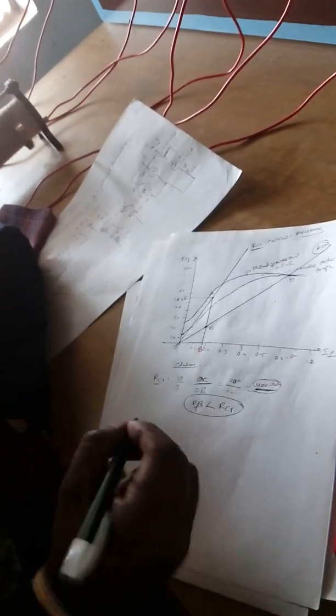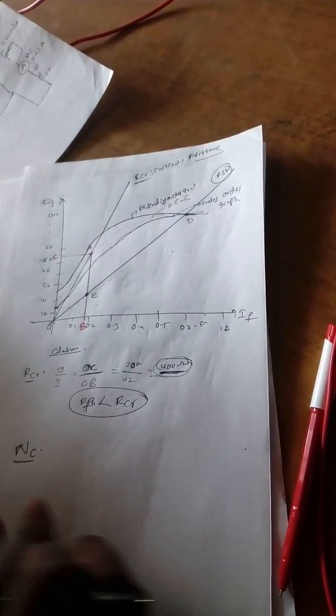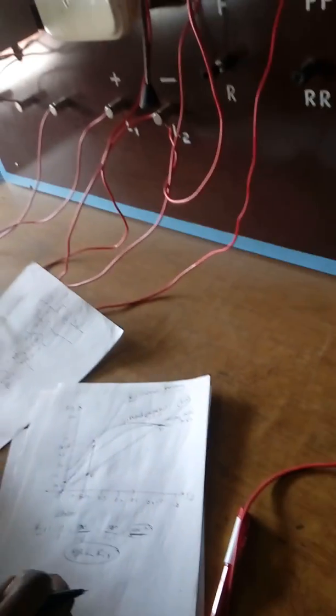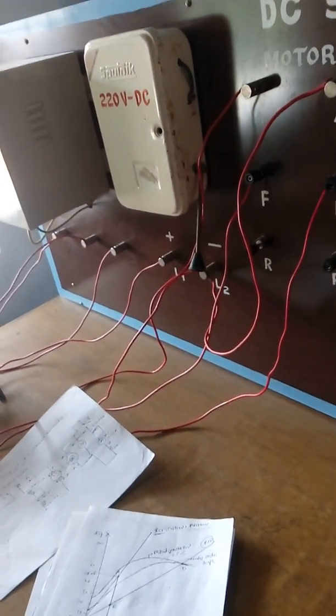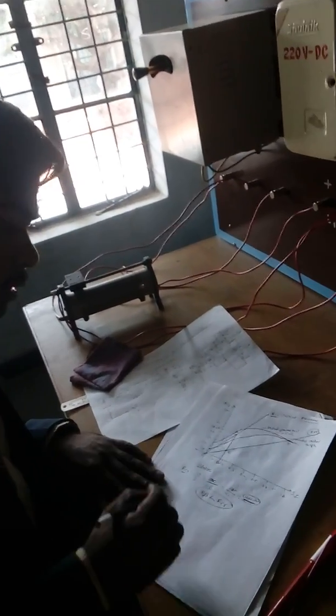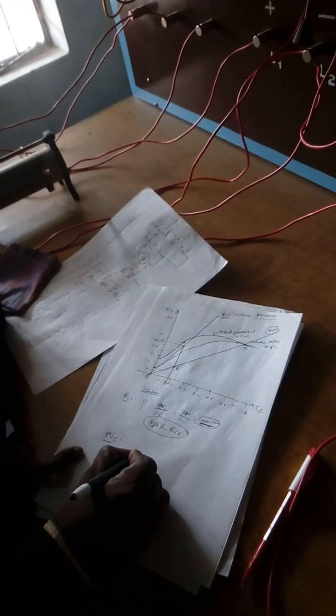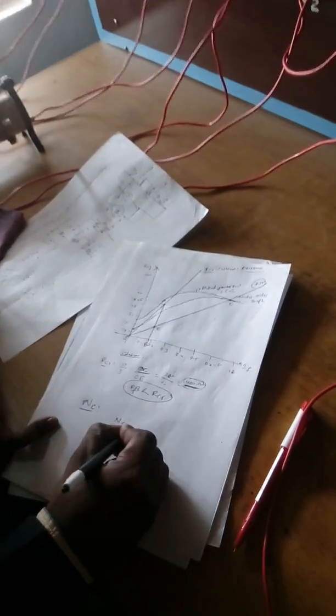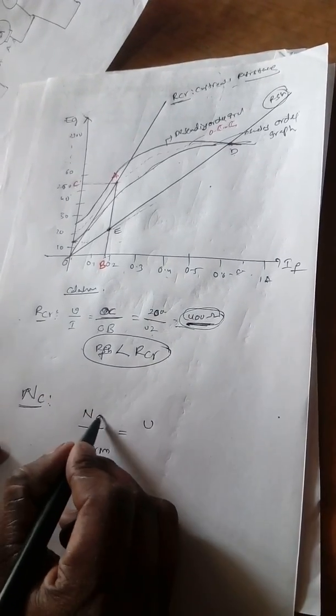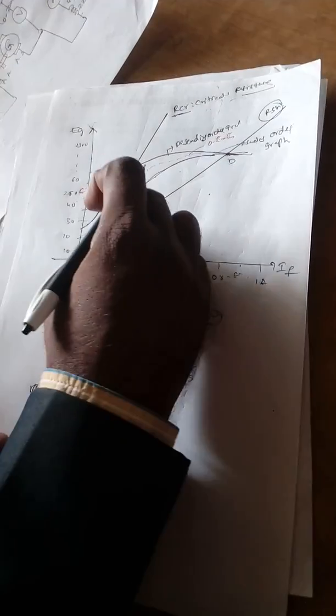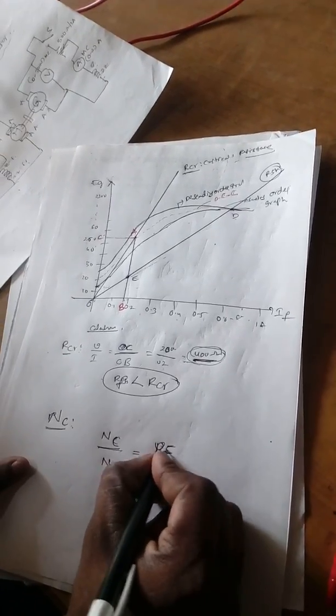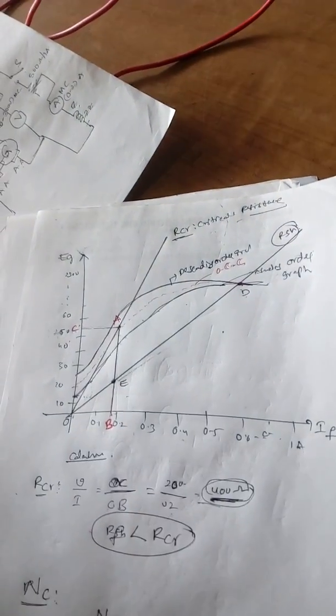Then we go for critical speed calculation. Critical speed means NC. Critical speed is the minimum speed below which the generator will not generate voltage. We need to run the motor at more than the critical speed value. From the diagram, we calculate: NC divided by N RPM is nothing but BE divided by AB — the small voltage divided by the total voltage.